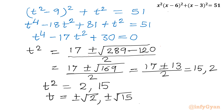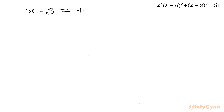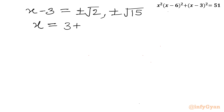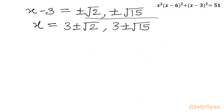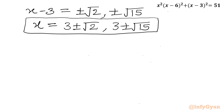Now t was our substitution — it was x minus 3. So I can write x minus 3 equals plus or minus √2 and plus or minus √15. Adding 3 to both sides, x equals 3 plus or minus √2, and 3 plus or minus √15. These are our four solutions, and all four are real.